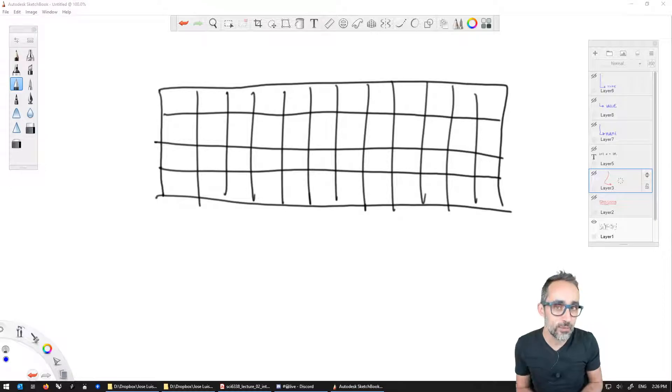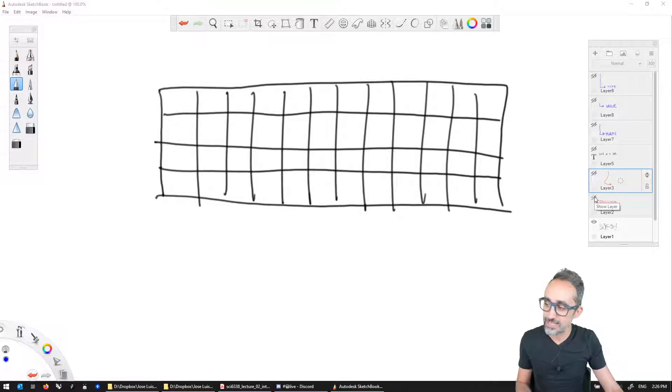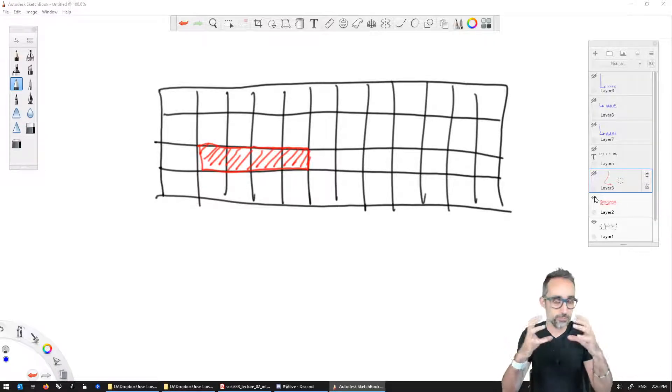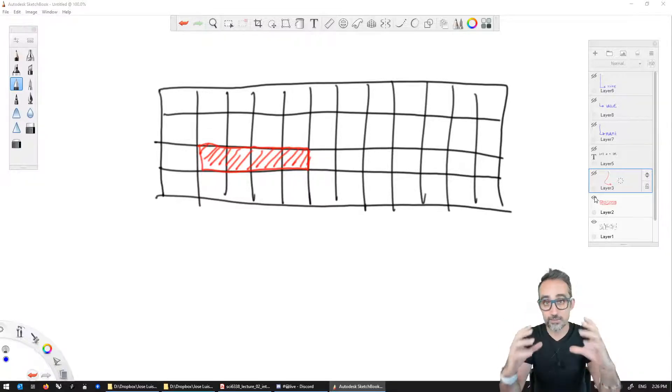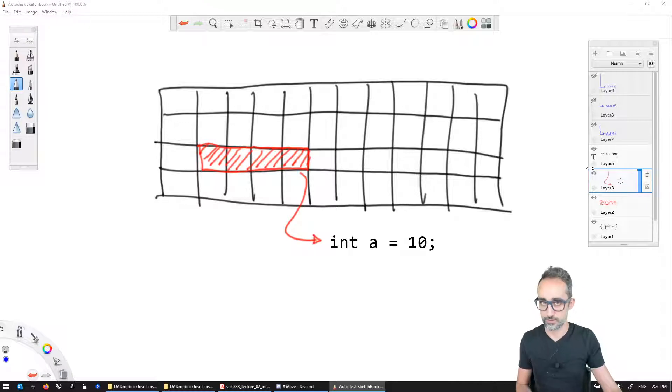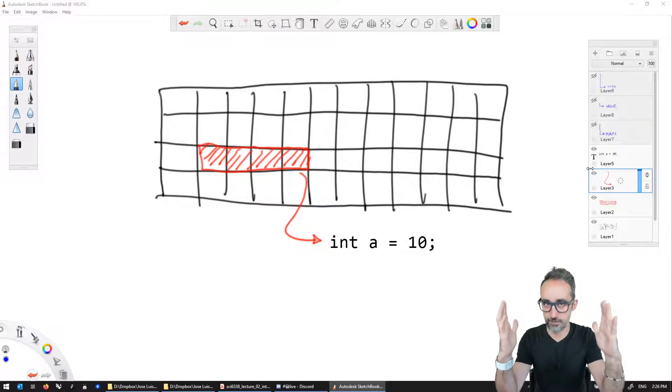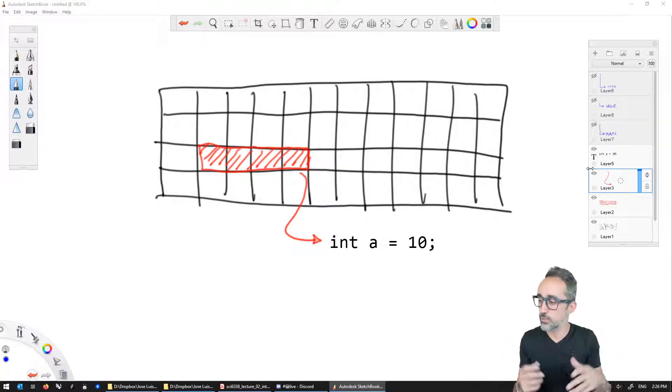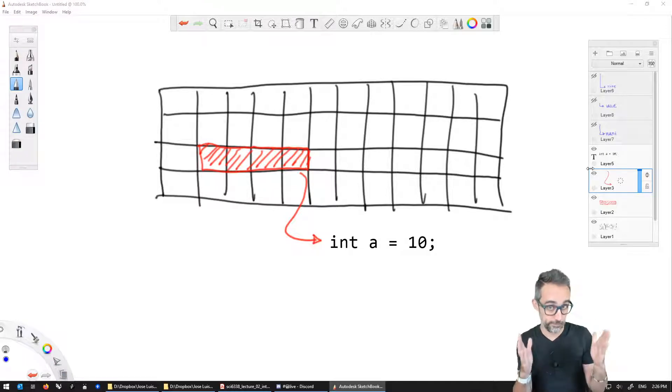When we declare a variable in computer software, we're telling the computer: can you find me a spot in memory that is empty and big enough to store the information I want? The computer finds that spot and reserves it for the life of the program just for that variable. How do we specify that process?